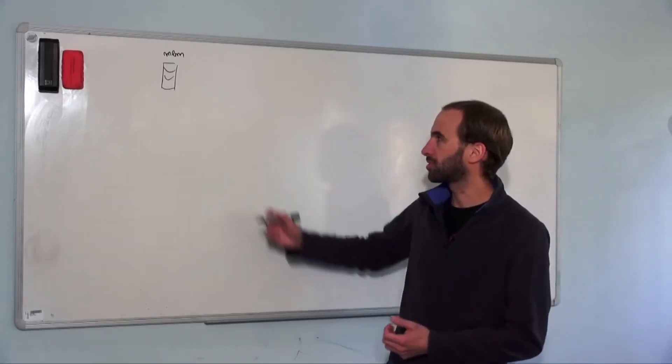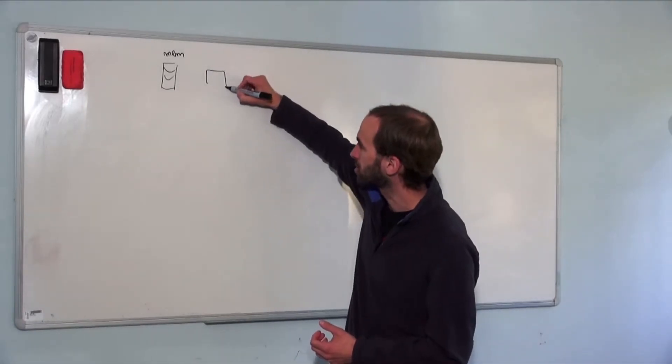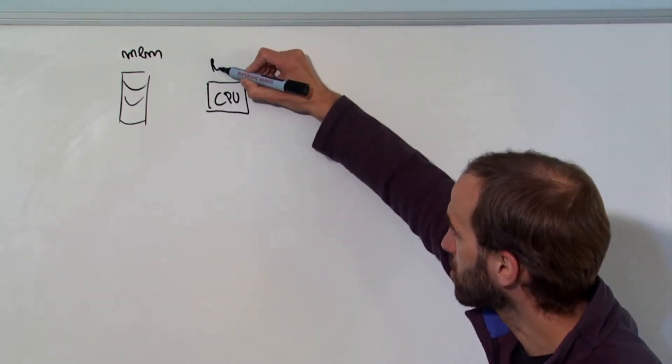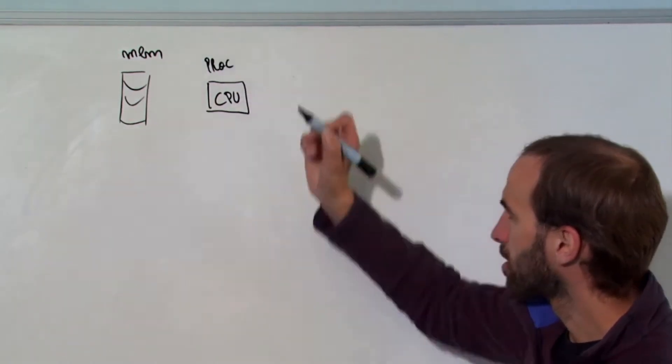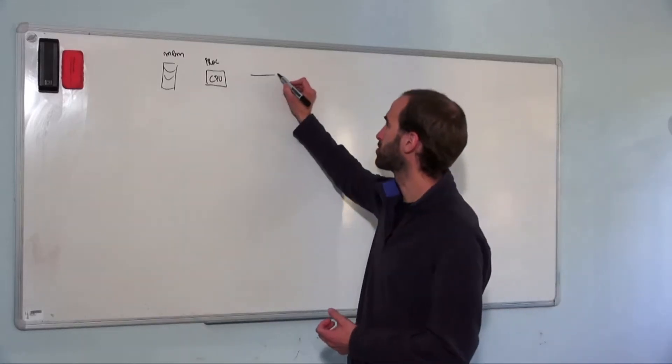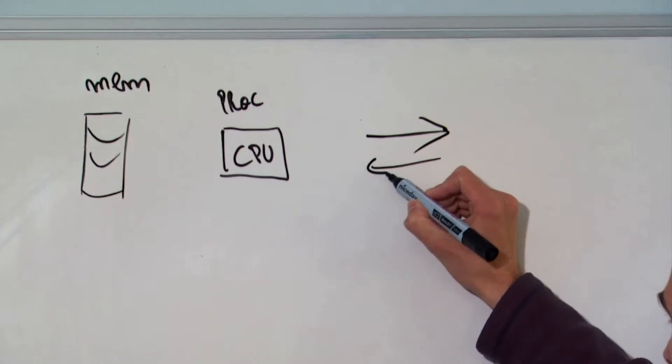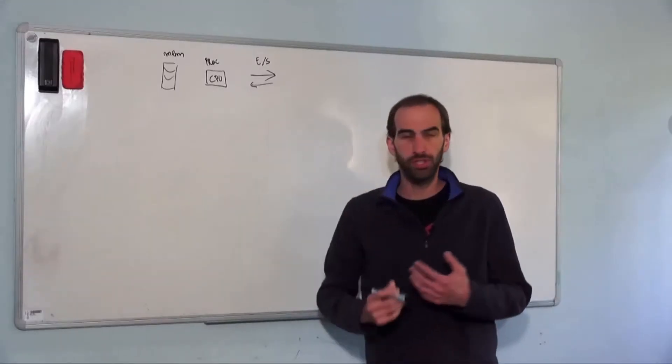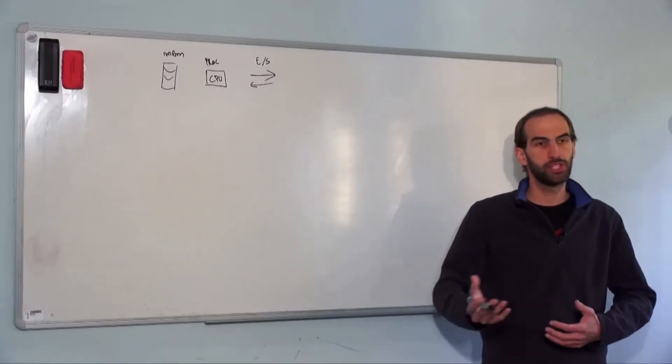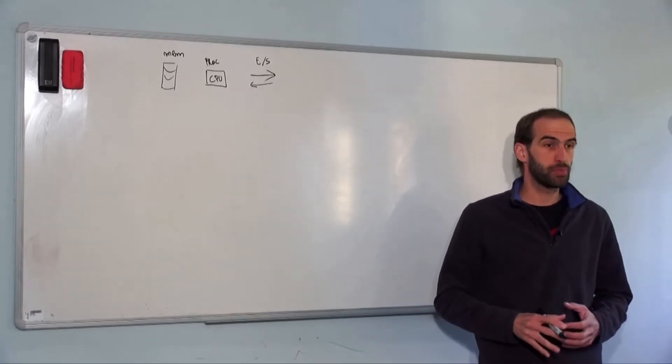Another important element in computers are the processors. Processors are the computer's brain, they perform calculations and execute tasks based on the data they retrieve in the memory. Finally, for the computer to communicate with the outside world, it has output-input components, such as for example a printer that allows data output, a screen that allows data display, a keyboard which allows data input inside the computer, or even a mouse. Internet is also an input-output component.